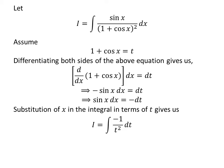Substitution of 1 plus cosine x by our assumed value t and sine x times differential of x by minus differential of t in the integral I gives us I equals integral of minus 1 upon square of t with respect to t.